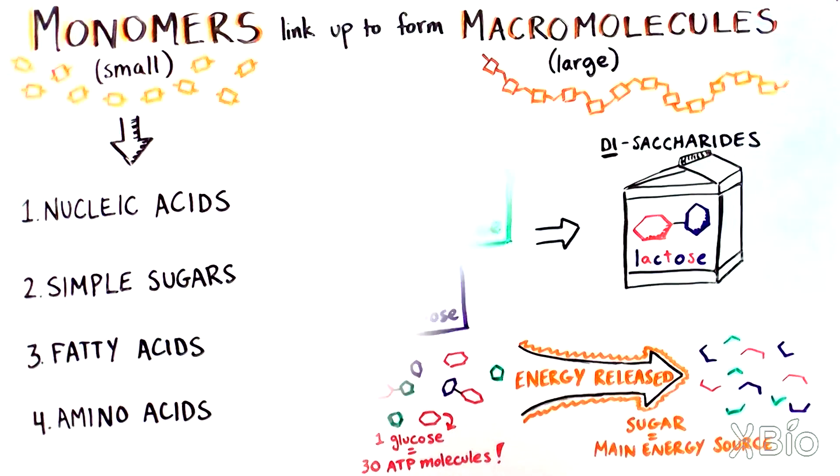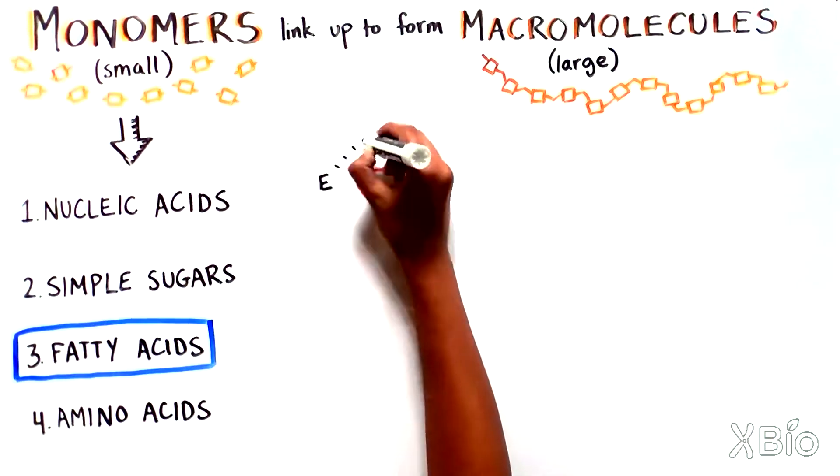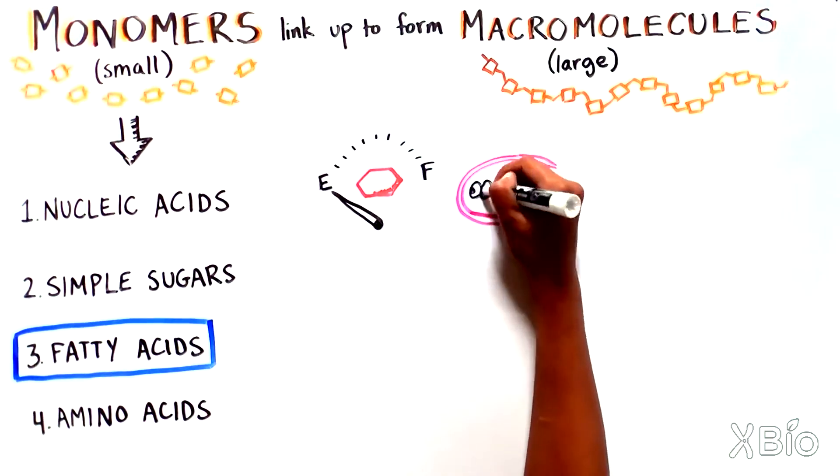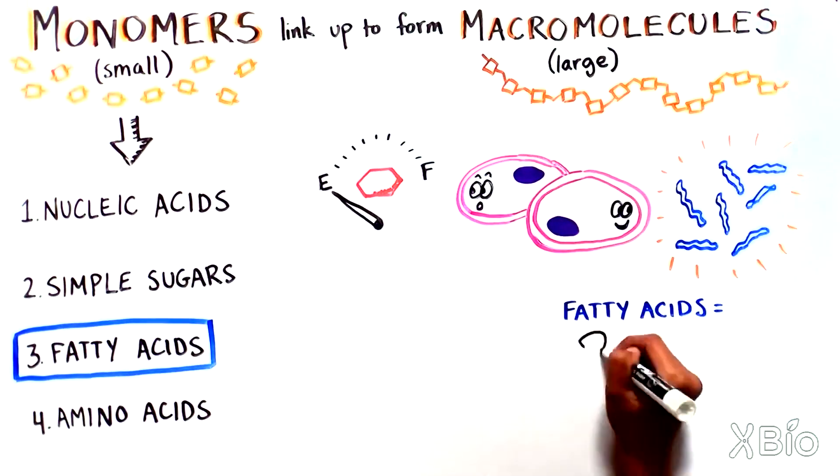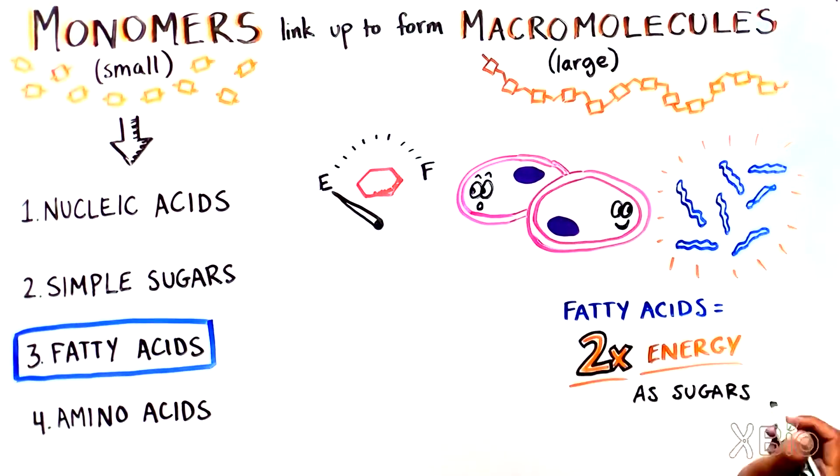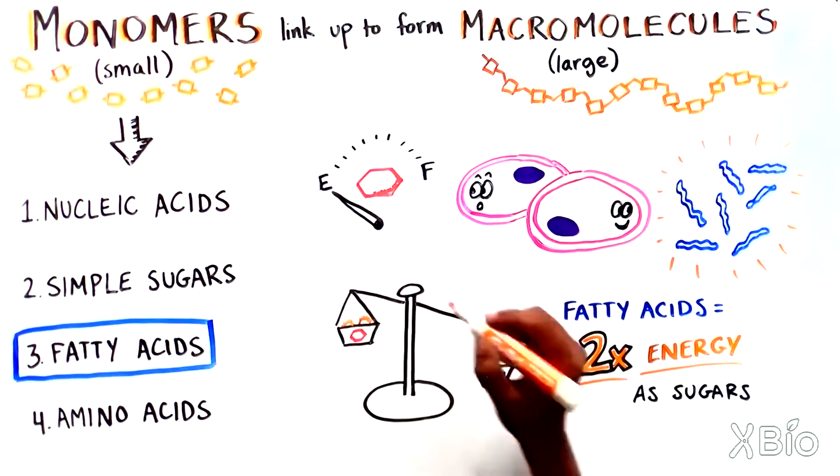Once cells use up their glucose stores, they turn to breaking down fatty acids, another type of small molecule. Fatty acids actually store two times as much energy as the same mass of sugars, which means that breaking them down leads to lots of ATP.